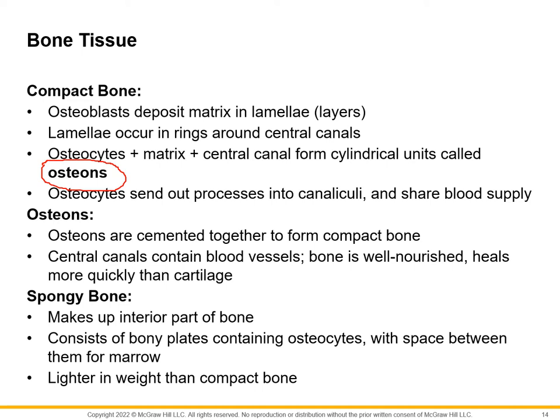The osteocytes are found in between little layers called lamellae. Little canals called canaliculi are what allow plasma to get in and bring oxygen and remove carbon dioxide. Osteons are the defining feature of compact bone. When we look at spongy bone, on the other hand, spongy bone doesn't have osteons. It's simply these bony plates or little bony webs — we call those trabeculae.